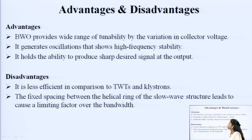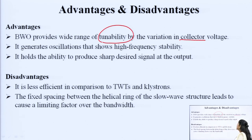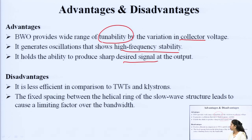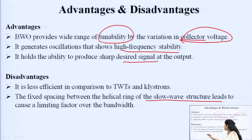BWO provides a wide range of tunability by variation of the collector voltage, because the collector voltage is not perfectly matched. This gives a wide variety of frequencies at which oscillations can be generated. It shows high frequency stability and the ability to produce a sharp desired signal at the output by varying the collector voltage. However, BWO is less efficient compared to TWT and klystrons. The fixed spacing between the helical rings of the slow wave structure leads to a limiting factor over the bandwidth.